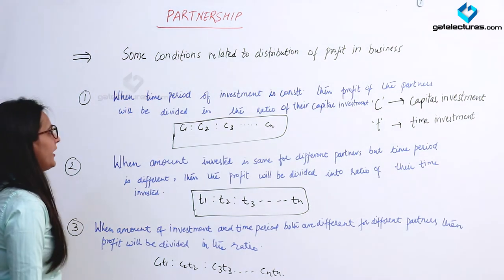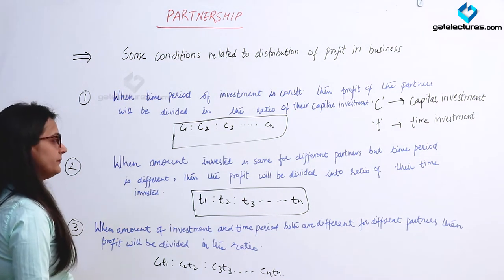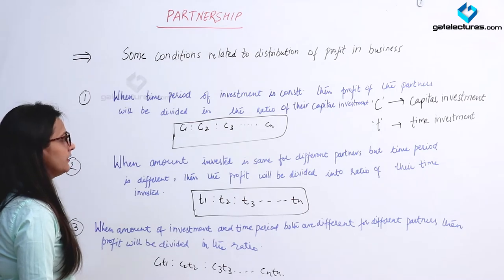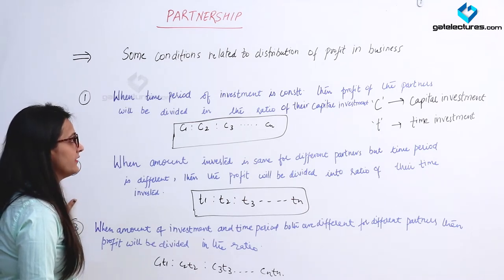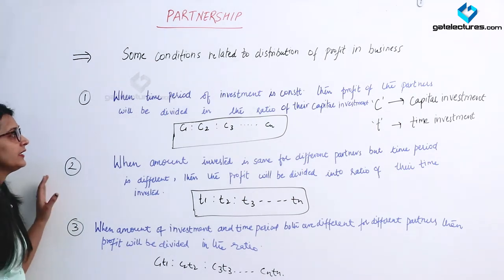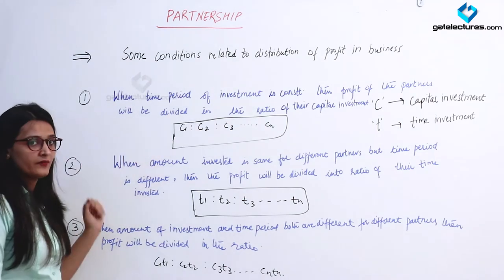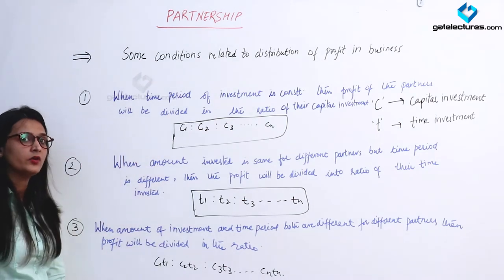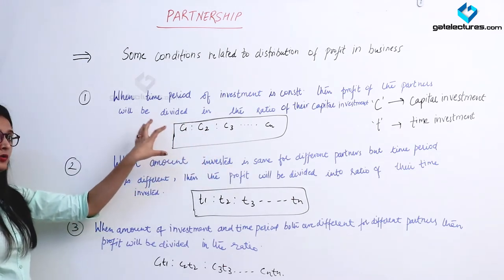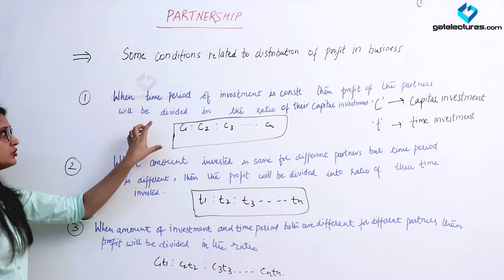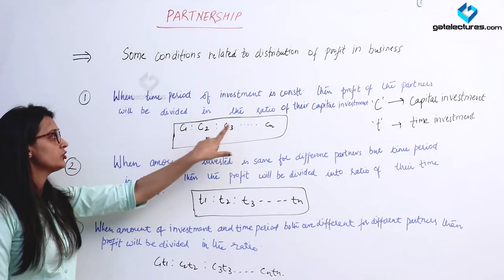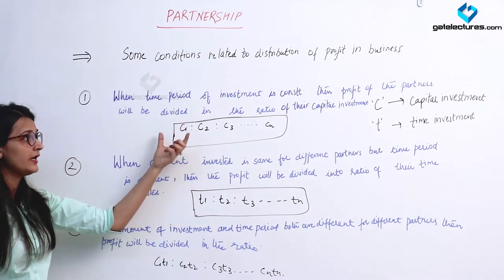The first condition: when the time period of investment is constant, the profit of the partners will be divided in the ratio of their capital investment. So if time period is same for all partners, the profit ratio equals C1 : C2 : C3, where C is the capital investment.